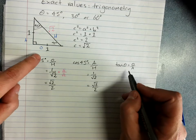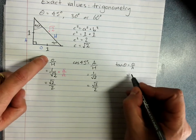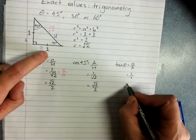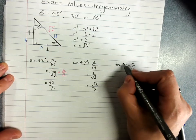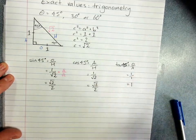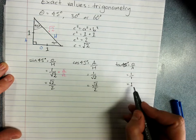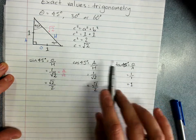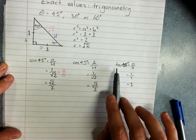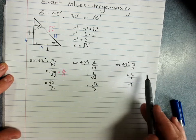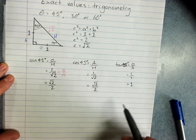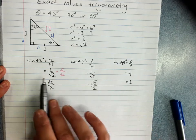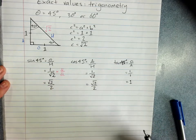And it makes sense that sine and cos of the angle would be the same when I've got 45 degrees, because the only way you're going to get 45 degrees in a right angle triangle is to have opposite and adjacent as the same. Tan of the angle, opposite over adjacent, is 1 over 1, which is 1. So those are the exact values for sine, cos, and tan of 45 degrees.